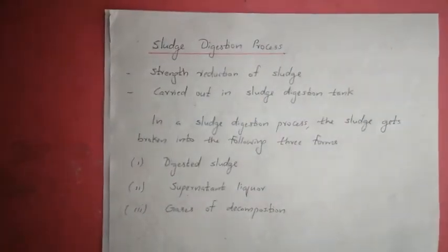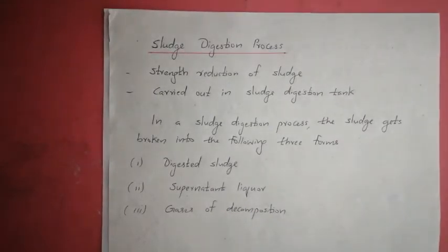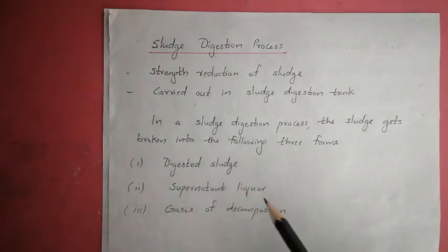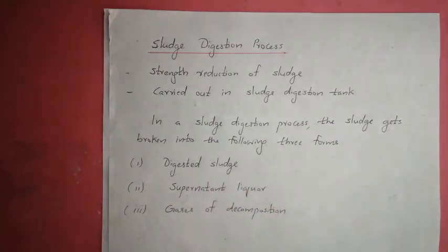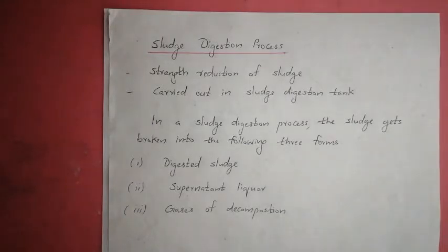In this process the sludge gets broken into three forms: digested sludge, supernatant liquor, and gases of decomposition. Digested sludge is a stable solid matter.